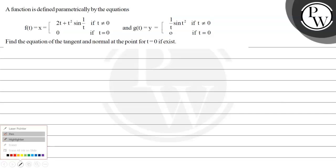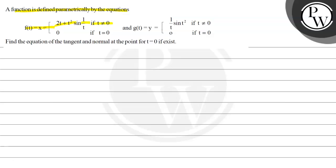Hello. Let us read this question first. The question says: a function is defined parametrically by the equations f(t) = x, where x equals 2t plus t² sin(1/t) if t ≠ 0, and 0 if t = 0. And g(t) = y = (1/t) sin(t²) if t ≠ 0, and 0 if t = 0. We have to find the equation of the tangent and normal at the point for t = 0, if it exists.